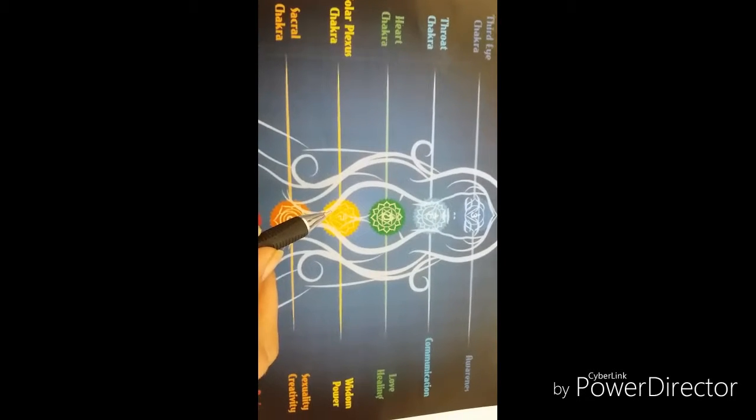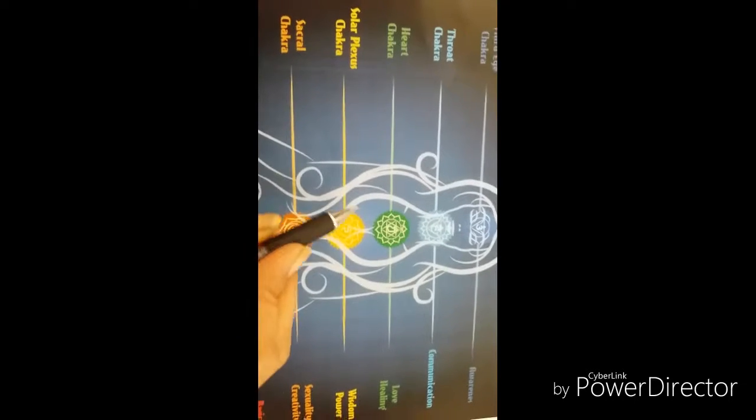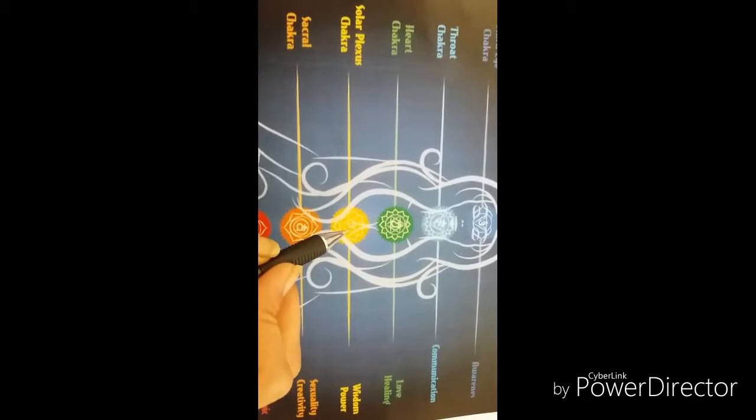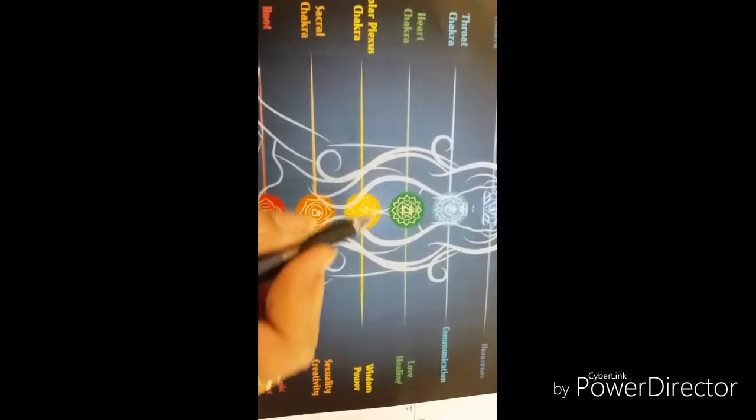Pancreas, liver, digestive tract, and skin. As you'll notice, wherever this chakra is located, it will influence the organs around. So going to the main chakra, that is the heart chakra.